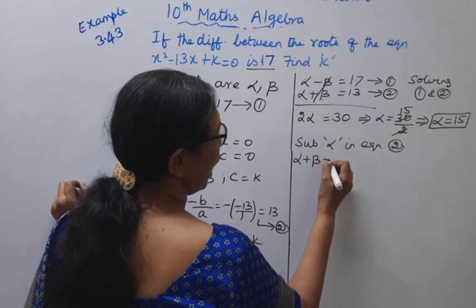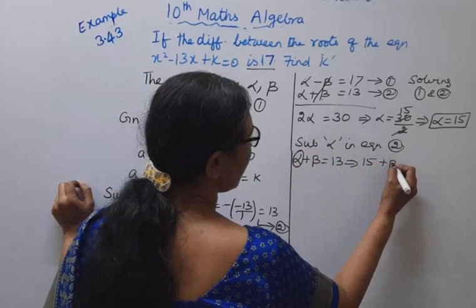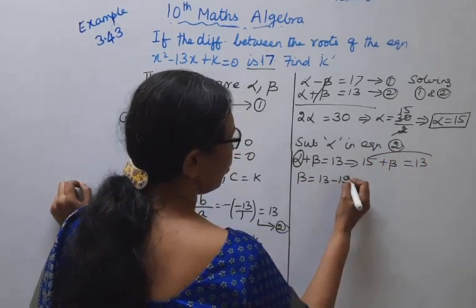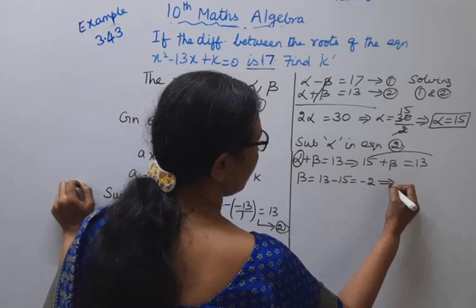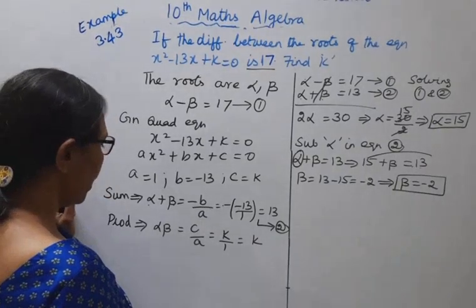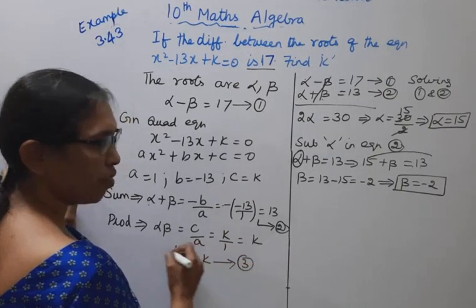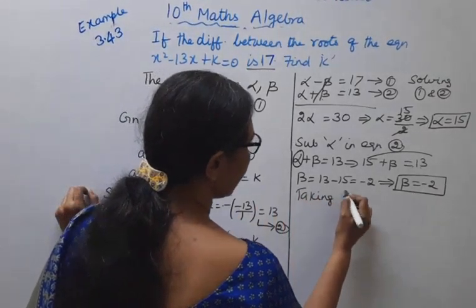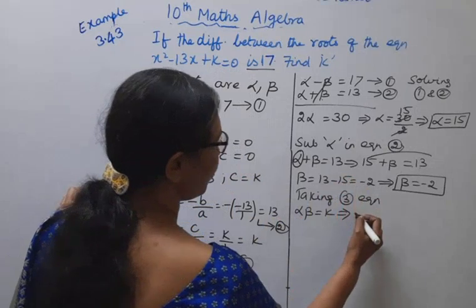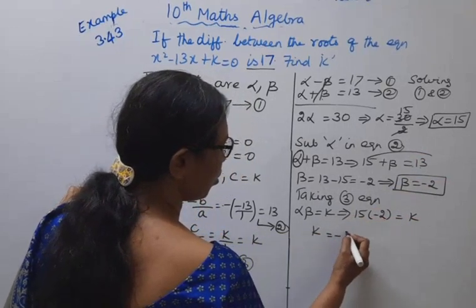Substituting alpha equals 15 into alpha plus beta equals 13: 15 plus beta equals 13, so beta equals 13 minus 15, which gives beta equal to minus 2. Now taking the third equation, alpha beta equals k: 15 multiplied by minus 2 equals k, so k equals minus 30.